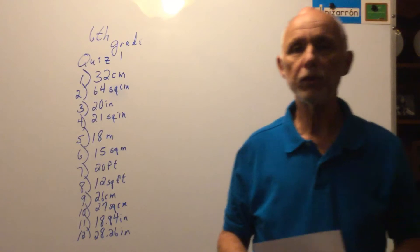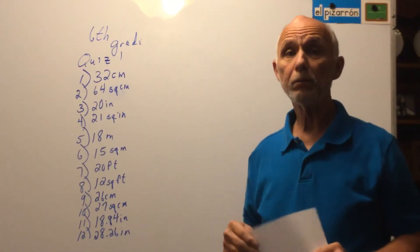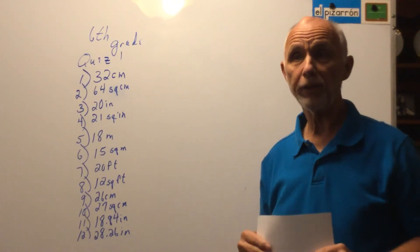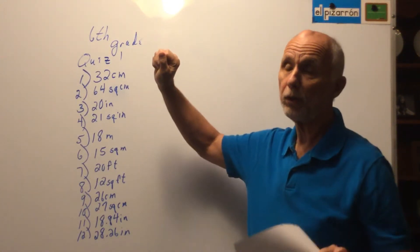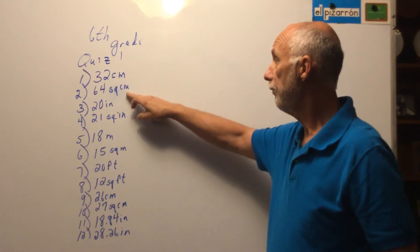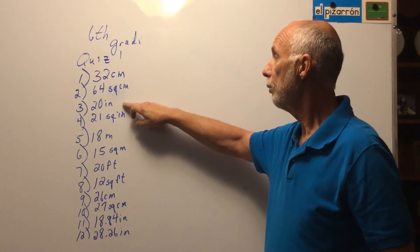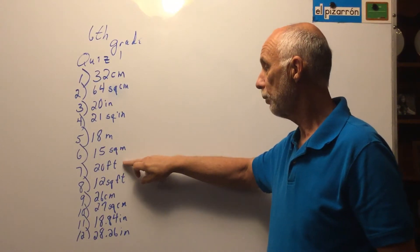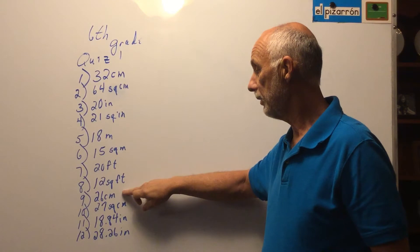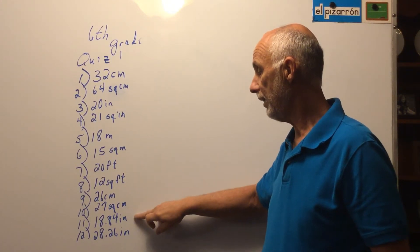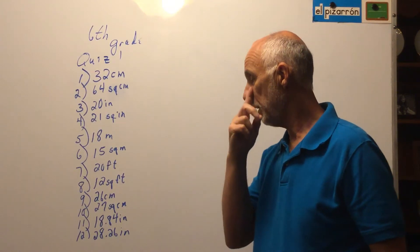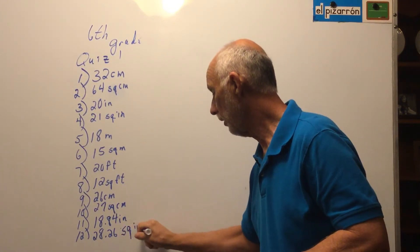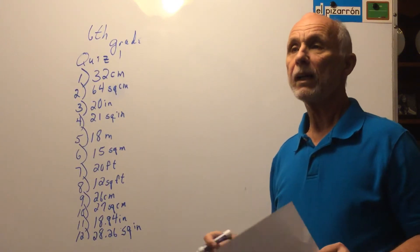These are the answers to the quiz you took right before the holiday. The grades on most of them were extremely good, but there were some of you that had trouble, so I wanted to go over all of them. These are the right answers — you can grade your own work. You should have: 32 centimeters, 64 square centimeters, 20 inches, 21 square inches, 18 meters, 15 square meters, 20 feet, 12 square feet, 26 centimeters, 27 square centimeters, 18 and 84 hundredths inches, and 28 and 26 hundredths square inches.